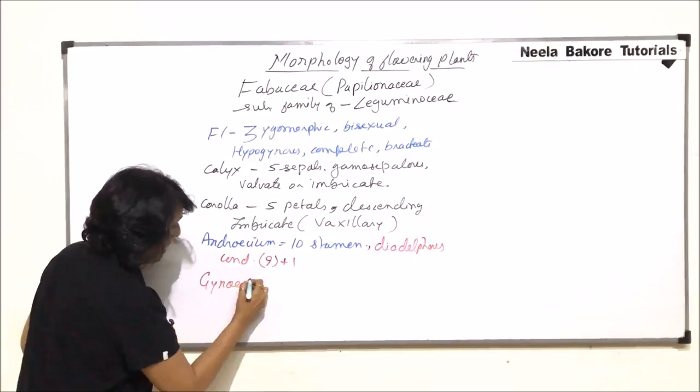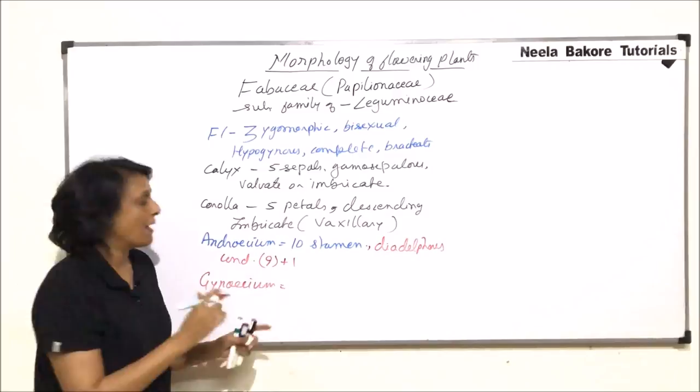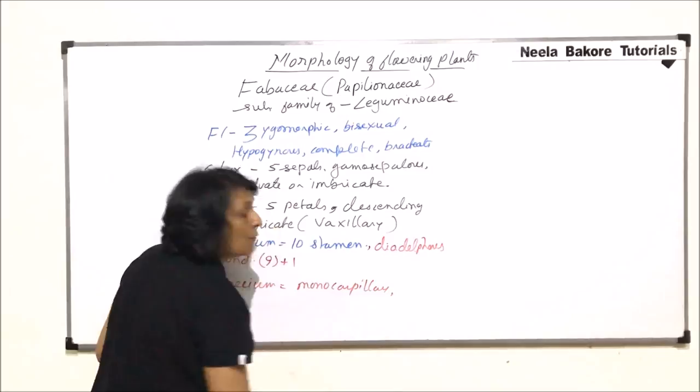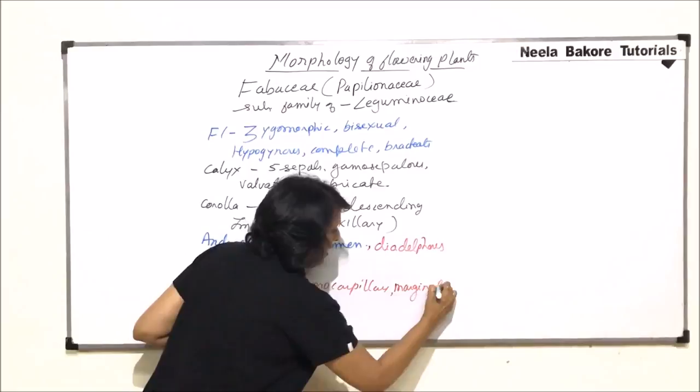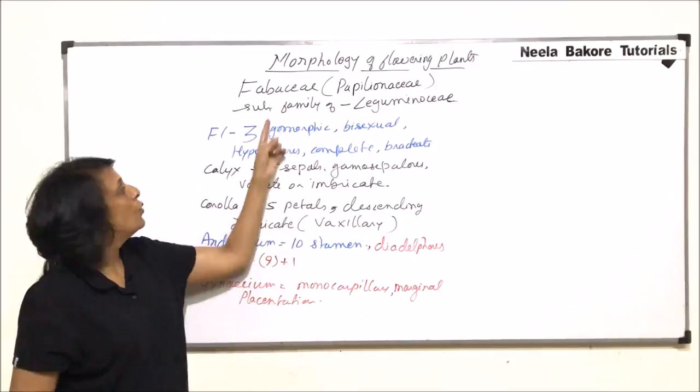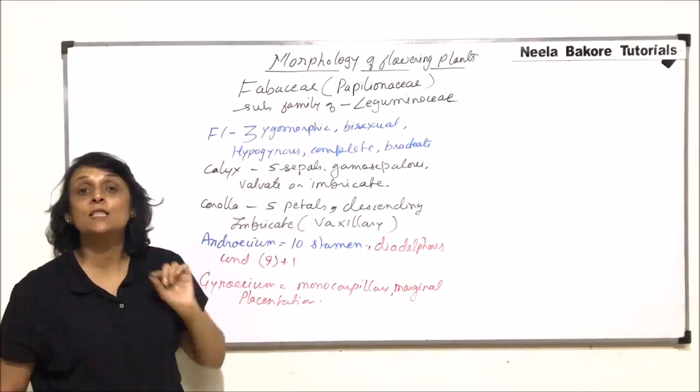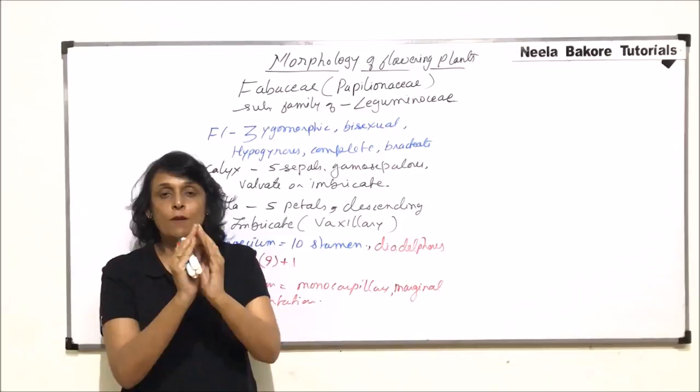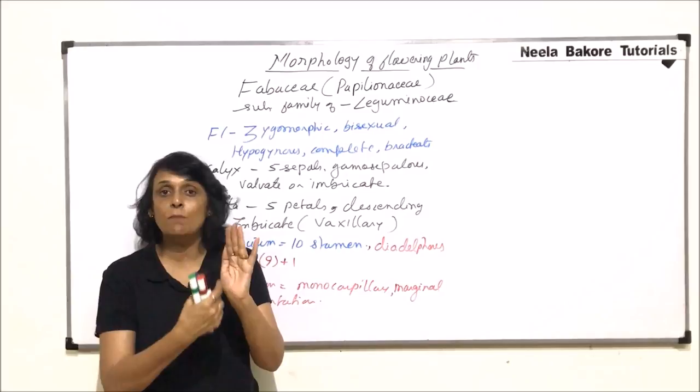So this is how there are two bundles. One which is formed by the fusion of filaments of nine stamens, and one stamen is completely free. Gynoecium. Gynoecium or pistil is with single carpel. So it is monocarpillary with marginal placentation. Now whenever such kind of families or such things are to be remembered, it is better to go with a very common example. The most common example of this family is pea. The pea that we eat, we get the pea pod.